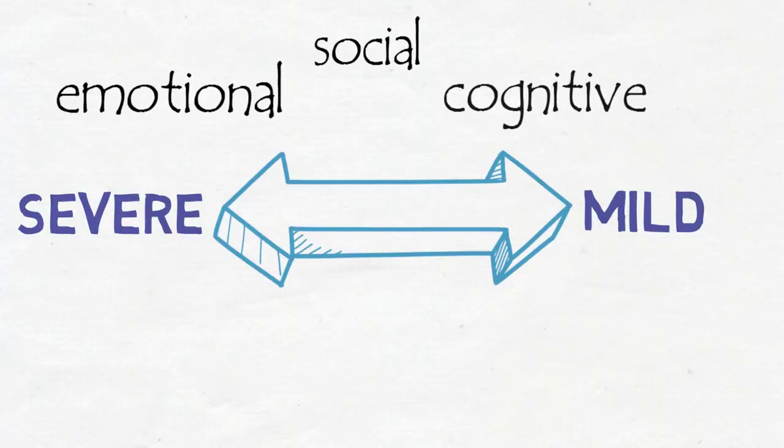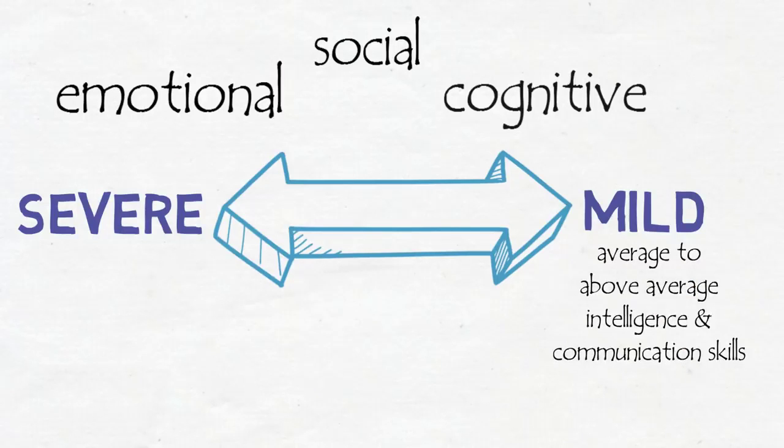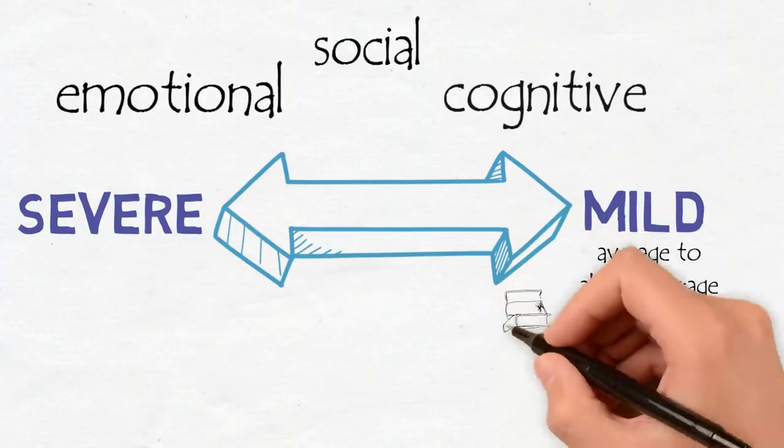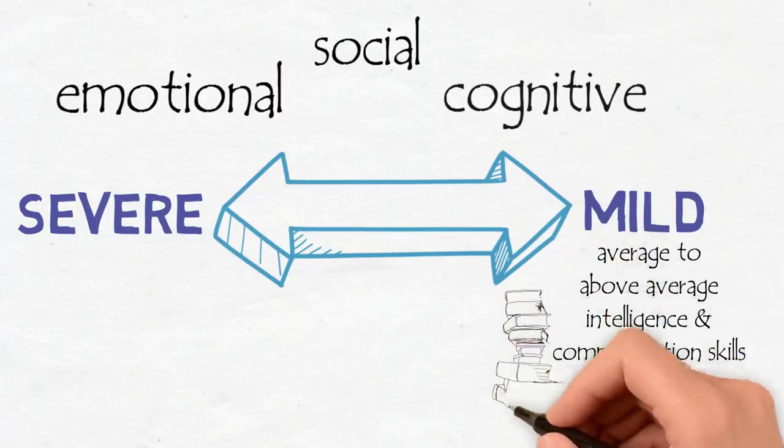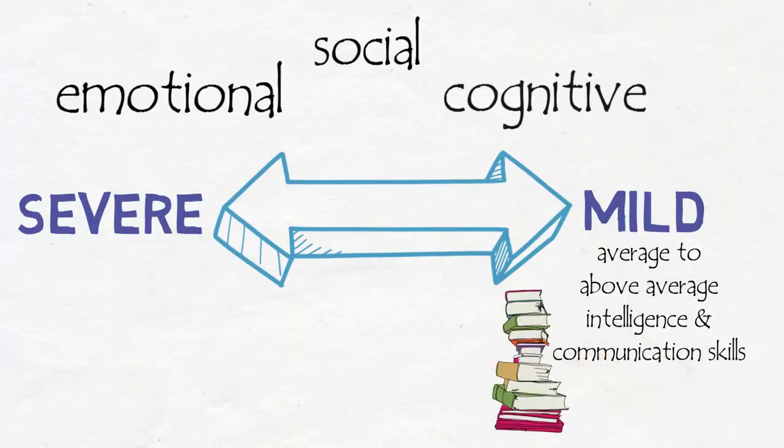At the high end of the spectrum, the signs and symptoms of ASD are mild. In fact, people with high-functioning autism usually have average to above-average intelligence and communication skills. Levels of functioning can be so high that outside people are unaware of a person even having ASD.